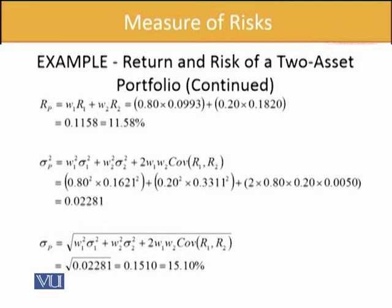For risk, as we have seen, we take the weight of one squared multiplied by its variance, then weight of two squared multiplied by its variance, then two times weight one times weight two times covariance — similar to the algebraic pattern of (a+b)² = a² + b² + 2ab. We have 0.8² times 16.21², plus 0.2² times 33.11², plus 2 times the weights times covariance. The end result is a variance of 0.0221, and the standard deviation comes out to be 15.1%. Compare that to 16.21% for S&P 500 alone and 33.11% for emerging markets alone — our portfolio risk is much lower.